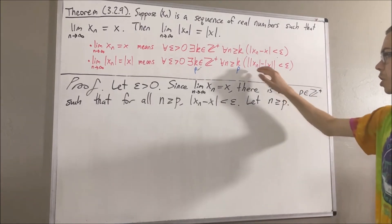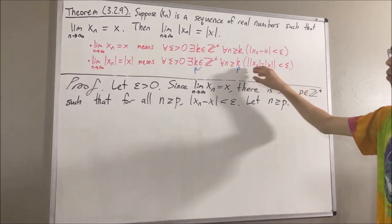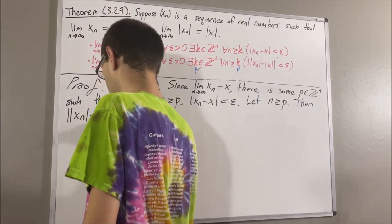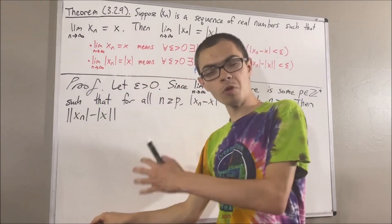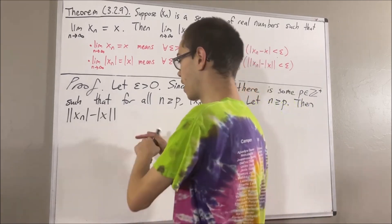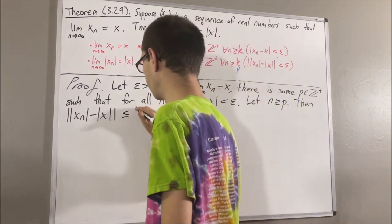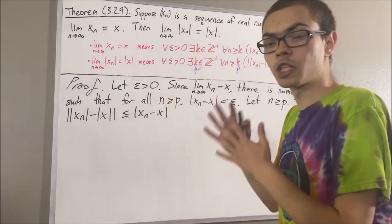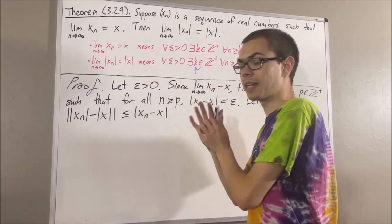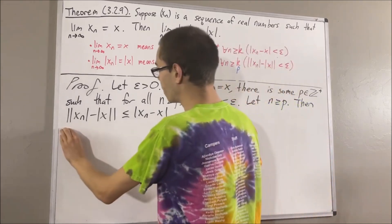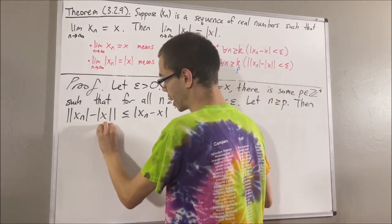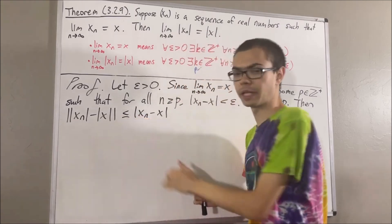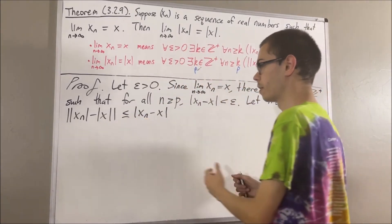From here, we want to show that this inequality is true. So let me start off by writing the left-hand side of this inequality. Now, if you recall from the reverse triangle inequality, this is really less than or equal to the absolute value of xn minus x. It is in fact true for all real numbers a and b that the absolute value of the absolute value of a minus the absolute value of b is less than or equal to the absolute value of a minus b.